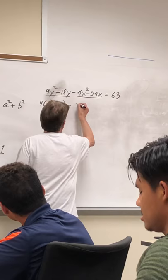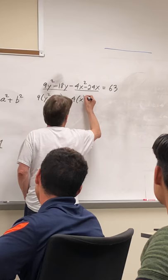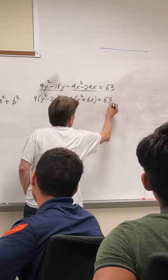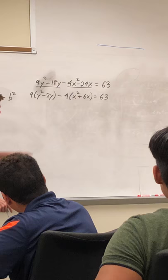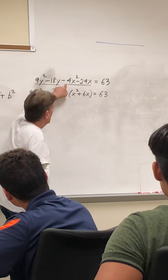You're factoring a negative 4 out of these two terms, so that's going to be x squared plus 6 times. You should always think about these things backwards. If I distributed that minus 4 term here, I'm going to get negative 4x squared minus 24, right?